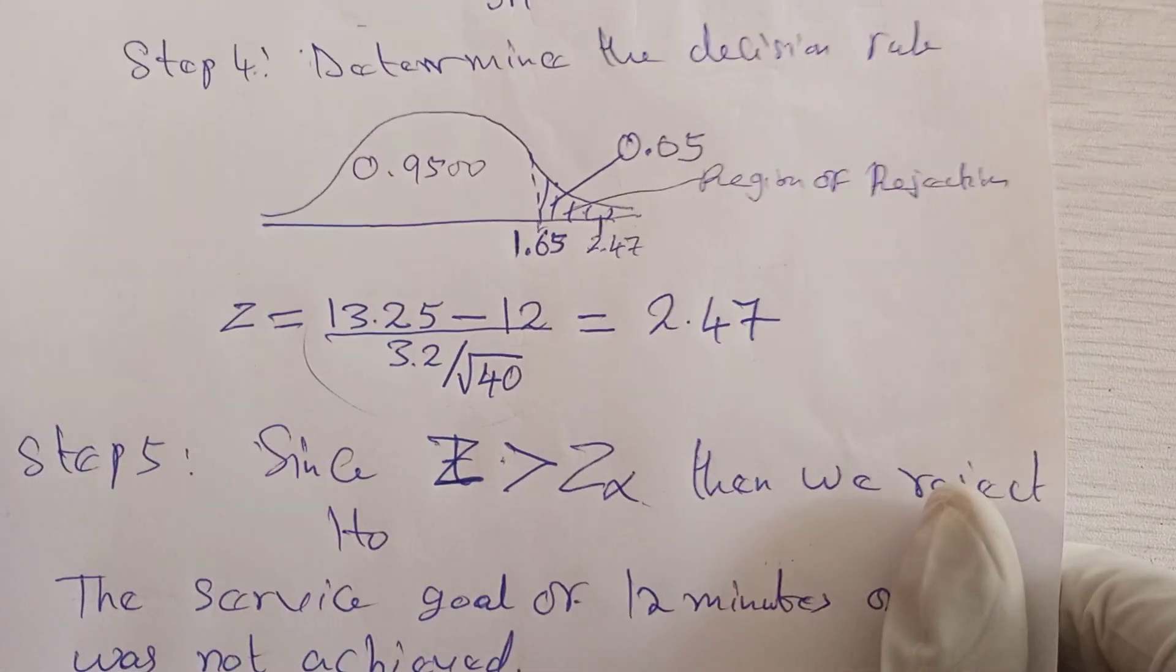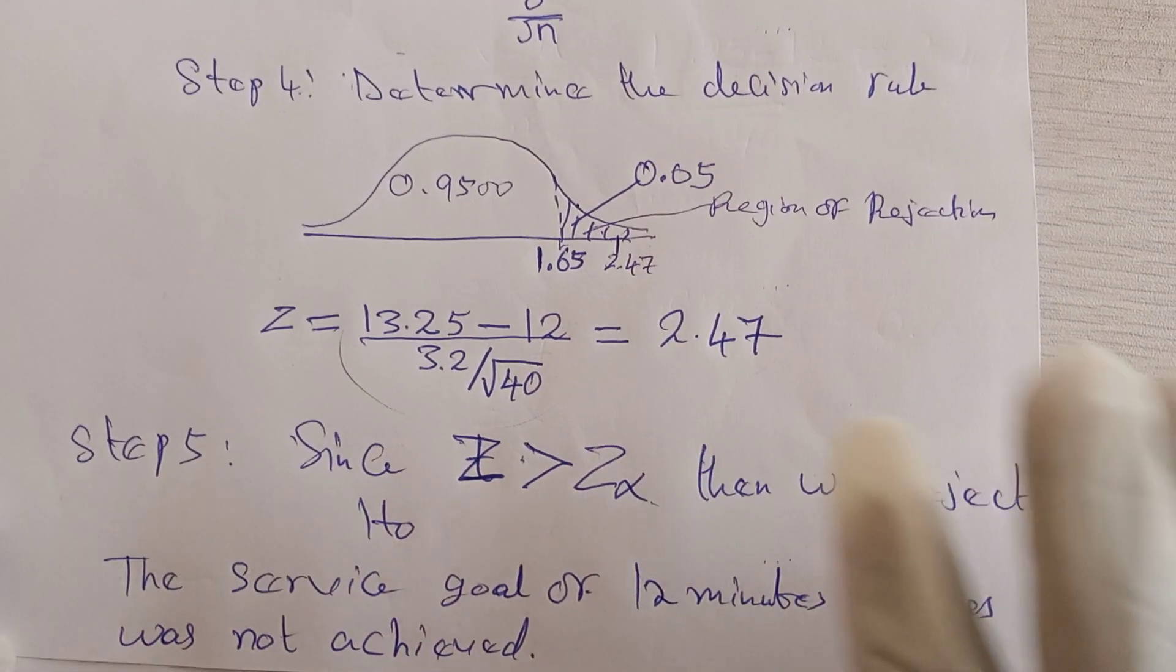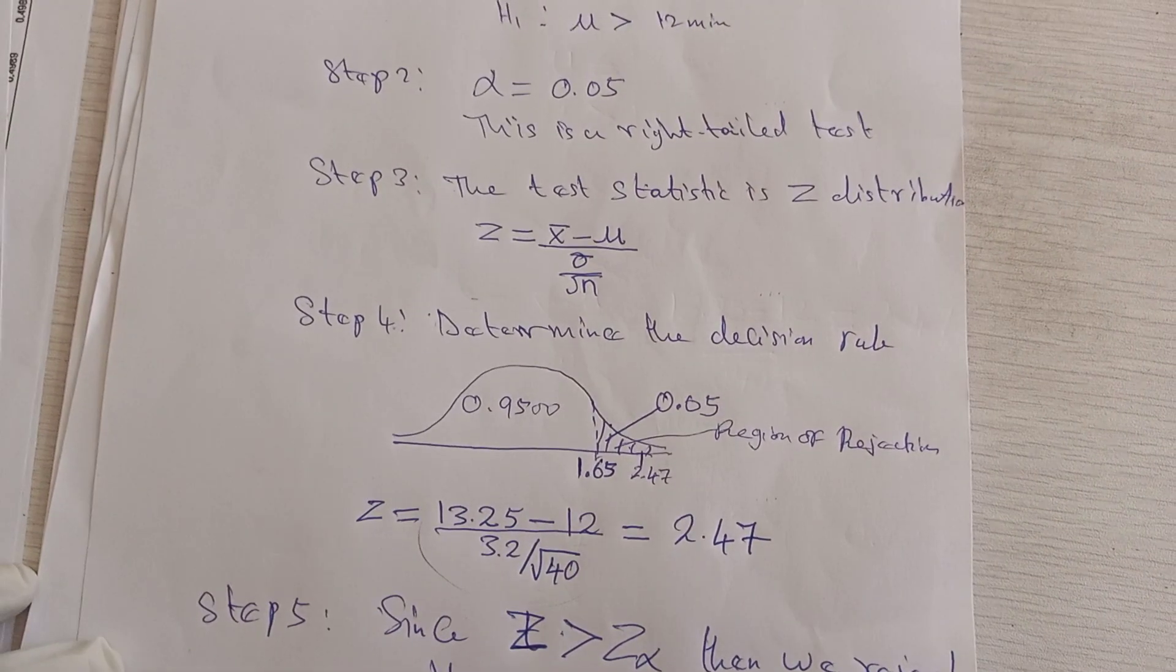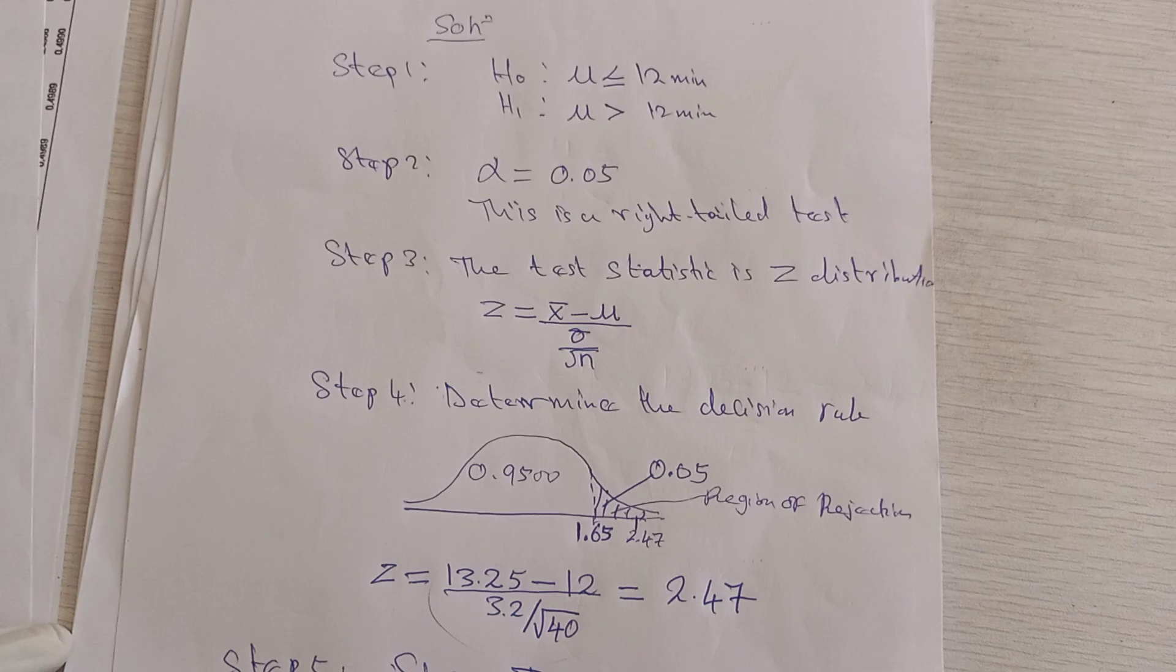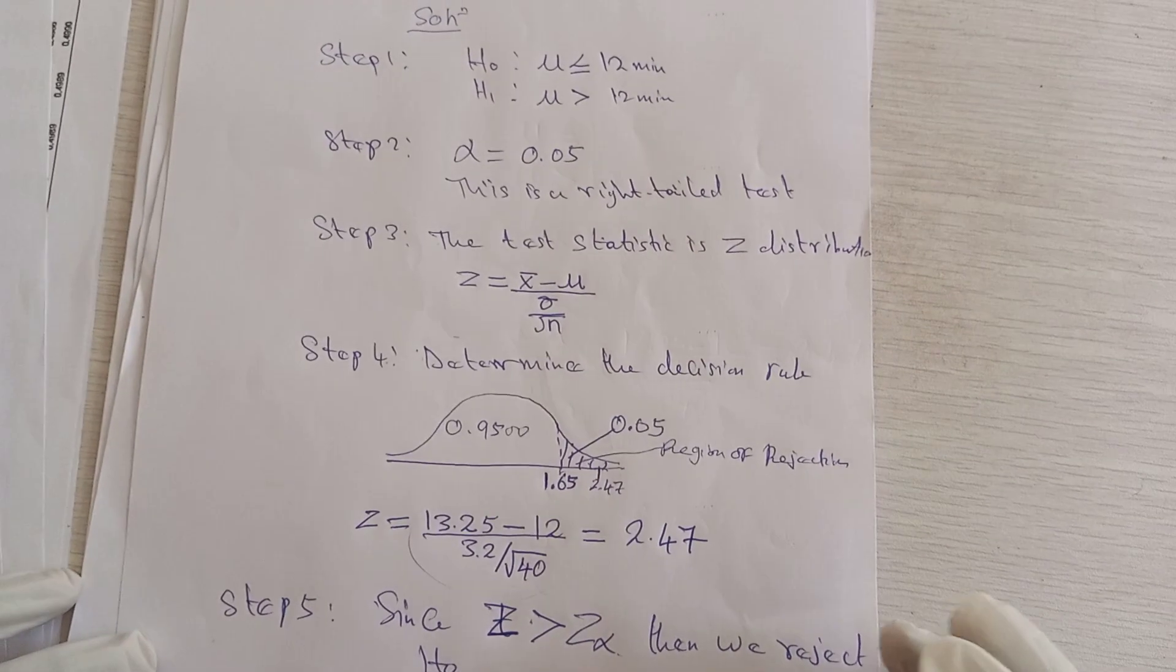Therefore, the service goal of 12 minutes or less was not achieved. In the previous lesson, we used the p-value method to solve this, but in this lesson, we are using the normal traditional method. This is how to do it, and it's very simple. Thank you!